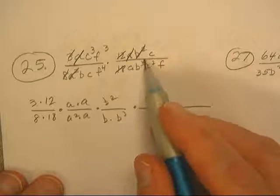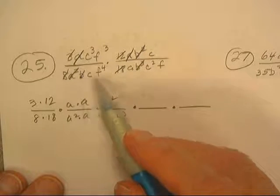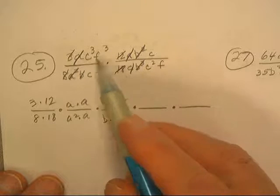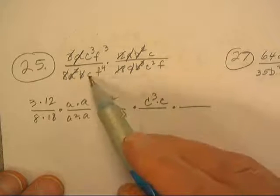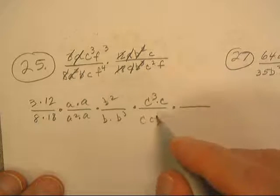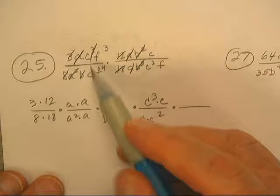and a B cubed. Already did that. A C, C cubed, C in the bottom, C, C squared. That's all the C's.